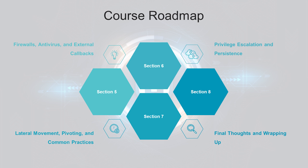Finally, in Section 7, Lateral Movement. Lateral Movement is going to be: once we're on a machine, how can we move around to different machines once we have our initial foothold? Pivoting — can we pivot through other machines to get to different environments? We're going to talk about that and some common practices.